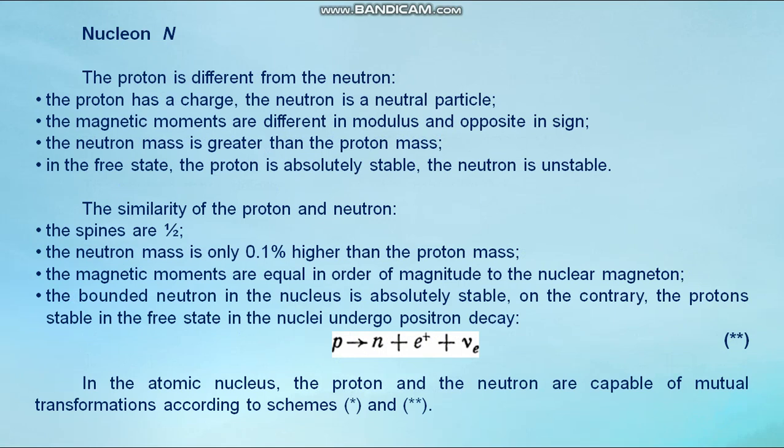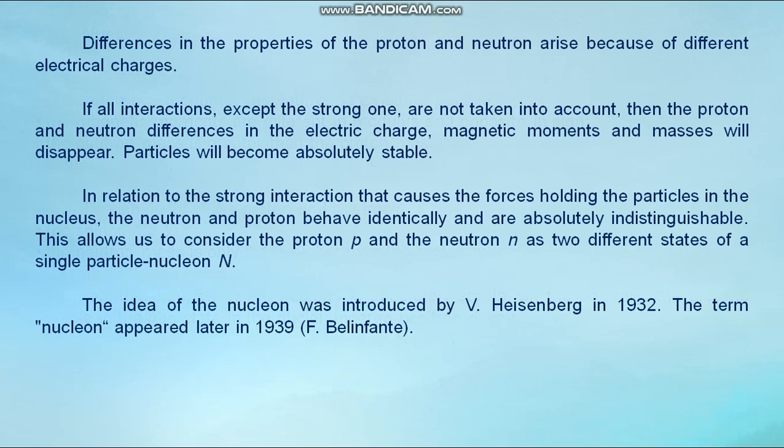Differences in the properties of the proton and neutron arise because of different electrical charges. If all interactions except the strong one are not taken into account, then the proton and neutron differences in the electric charge, magnetic moments, and masses will disappear. Particles will become absolutely stable. In relation to the strong interaction that causes the forces holding the particles in the nucleus, the neutron and proton behave identically and are absolutely indistinguishable. This allows us to consider the proton p and the neutron n as two different states of a single particle, nucleon.